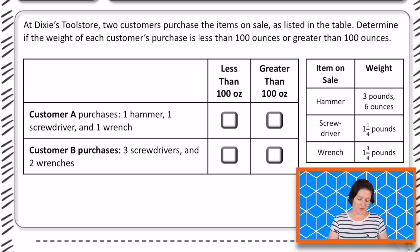Welcome back, fifth grade! Okay, so this one says, at Dixie's Tool Store, two customers purchase the items on sale as listed in the table. Determine if the weight of each customer's purchase is less than 100 ounces or greater than 100 ounces.